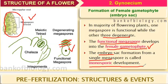Higher plants undergo monosporic development: one megaspore mother cell undergoes meiosis and makes four cells; after becoming four cells, one cell is functional while the other three degenerate. The single functional cell then develops into the female gametophyte — the embryo sac — and that is why it is called monosporic development.